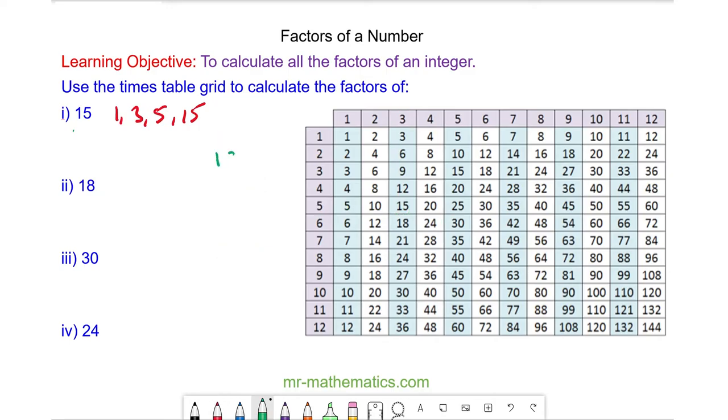The factors of 18 we know 1 and itself. We know 18 is even so 2 must be a factor and you can see in the 2 times tables it is 2 times 9.